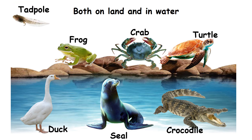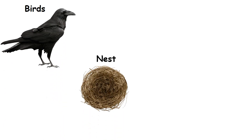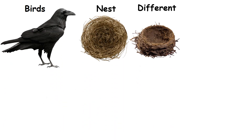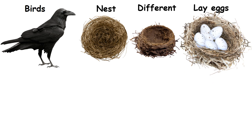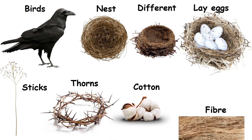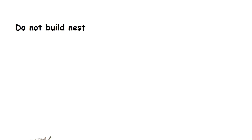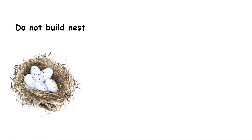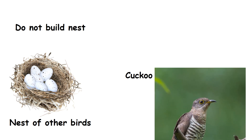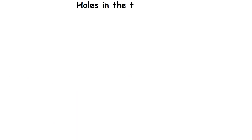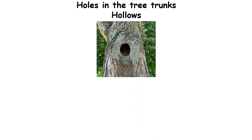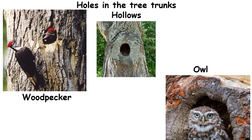Birds: Birds live in nests. Each bird's nest looks different. They lay eggs in the nest. Birds use sticks, thorns, cotton and fiber to build their nests. Some birds do not build nests. They lay their eggs in the nests of other birds. Example: cuckoo. Some birds live in holes in the tree trunk called hollows. Examples: woodpecker, owl and parrot.